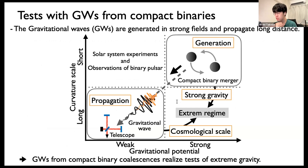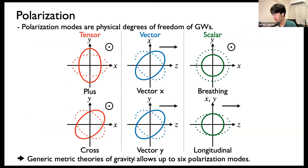Gravitational waves from compact binary coalescences are generated in the strong fields and then propagate long distances. We can observe them with gravitational wave telescopes such as LIGO, Virgo, and KAGRA. So the observation of gravitational waves from compact binaries enables such tests of extreme gravity. There are various methods for testing GR, and here we focus on polarizations.